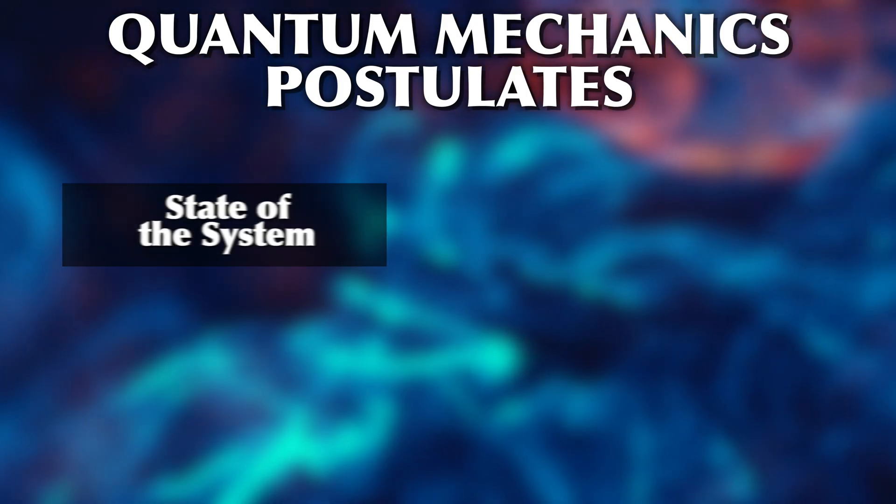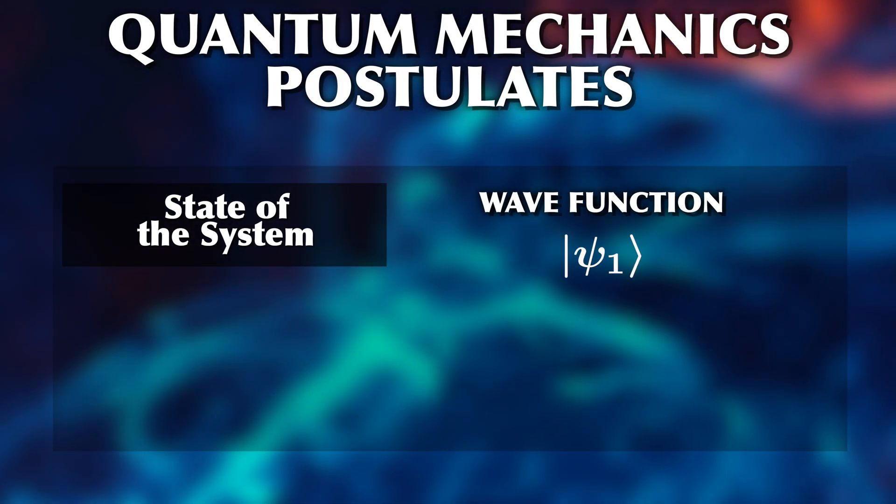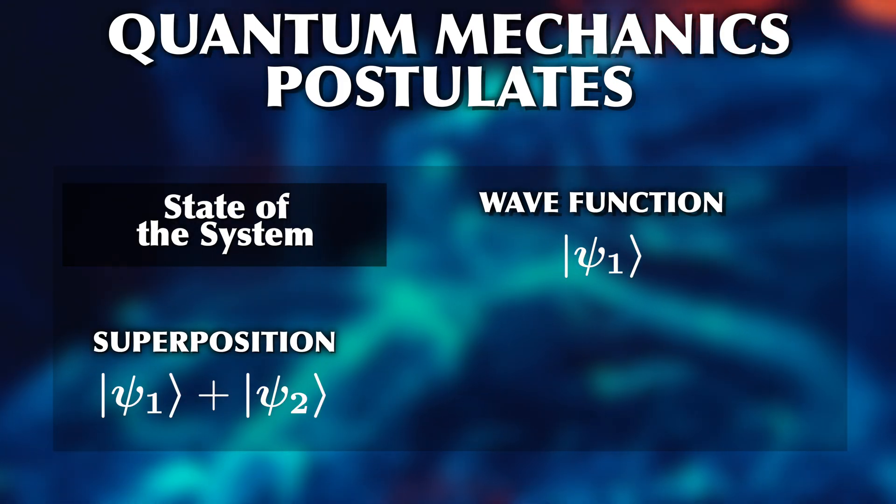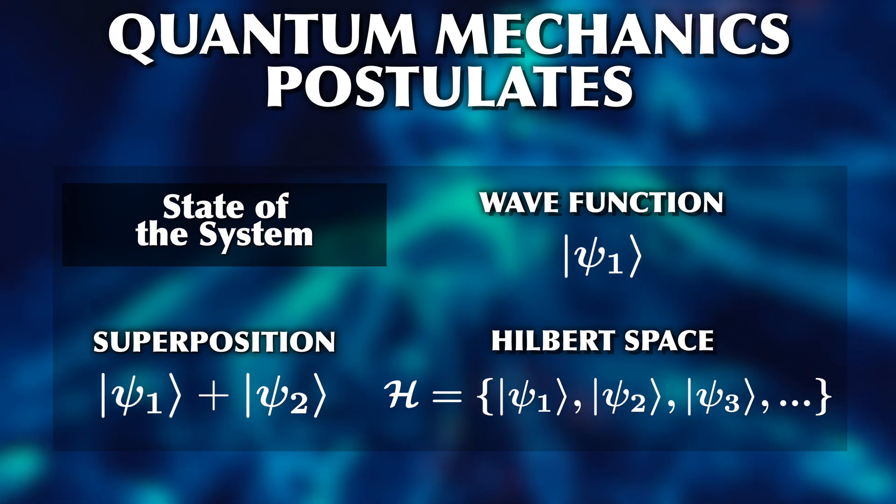For now, let's summarize. The state of a quantum system is defined by its state vector or wave function, which can also be a superposition of multiple states. This vector belongs to a Hilbert space, a space containing all possible states.